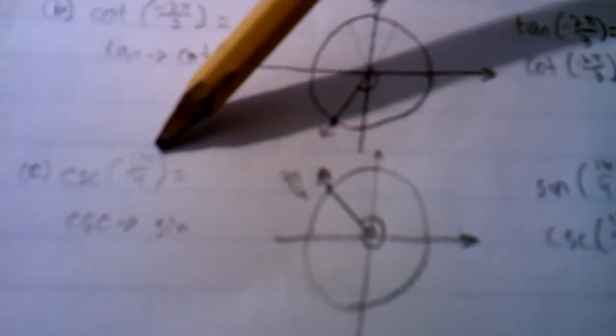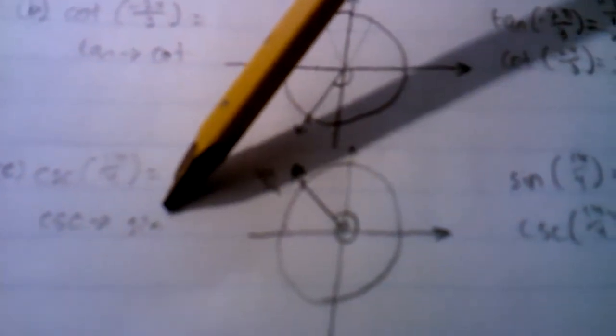Last one is cosecant of 11π/4. Cosecant relates to sine. This is the graph of 11π/4, the angle. It's going to be 1 revolution around, and essentially it's just going to be 3π/4.